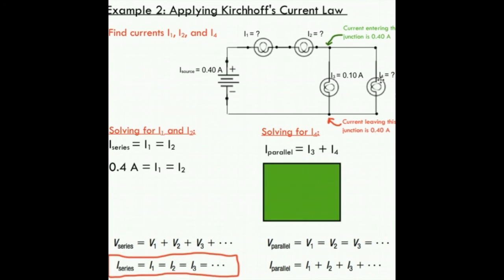I know that this current and this current are going to add to give me a current of 0.4 amperes. That's what came in, that's what's leaving. I've got 0.1 amperes for the third current. I don't know my fourth current, I can just simply solve for that using basic algebra.